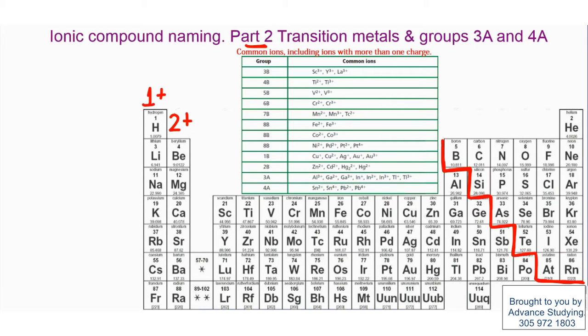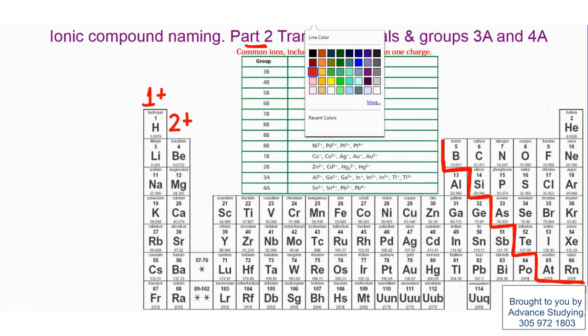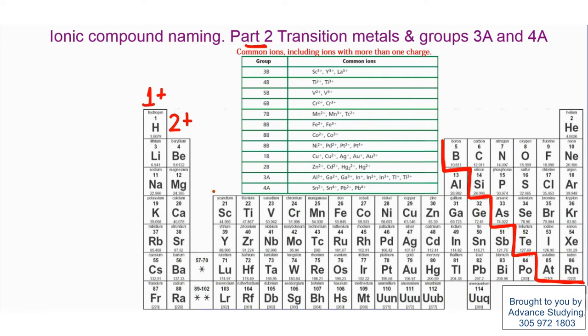Elements that are boxed over here, and even the ones at the bottom, transitional elements, are elements that could have more than one charge. So we box them up, and these elements could have more than one charge.